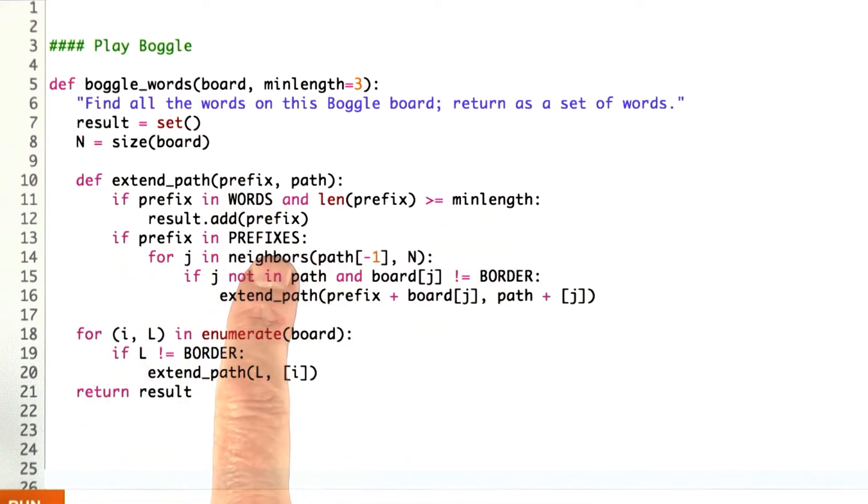If the prefix is in my set of prefixes, then I look for every neighboring square j, which is a neighbor of the last element of my path.